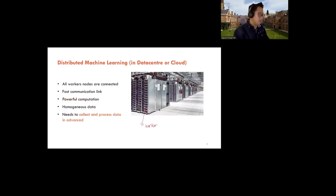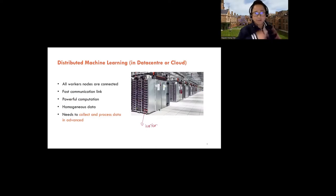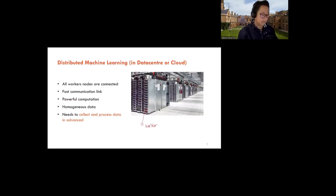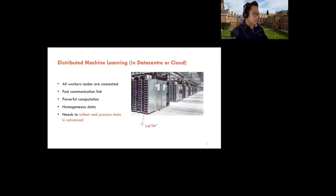In this context, the data is homogeneous. What does homogeneous data mean? In a data center, you first collect and process the data centrally. The data is collected, shuffled, and made IID, then distributed back to a group of workers. The workers run training and exchange models with a server called the parameter server. That's called distributed machine learning — where computation is distributed, but the data still needs to be collected and pre-processed centrally.